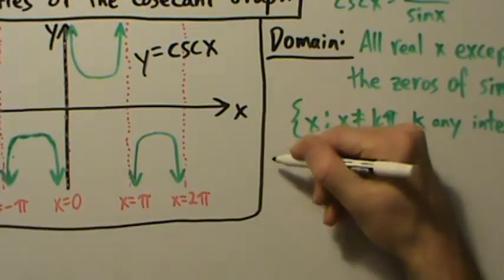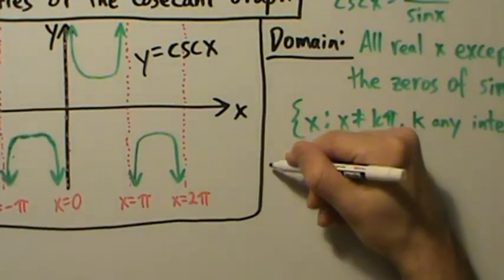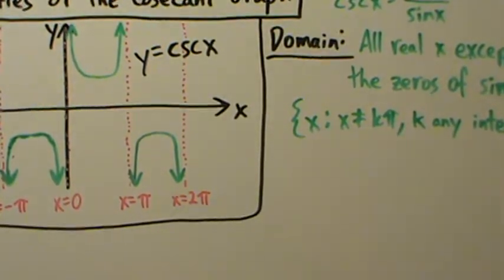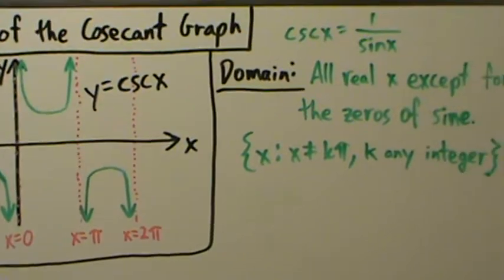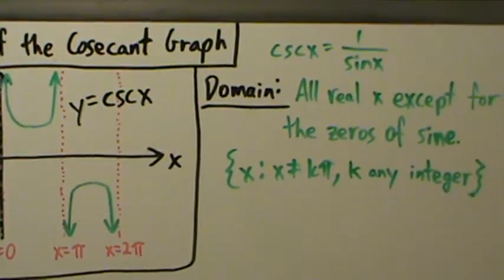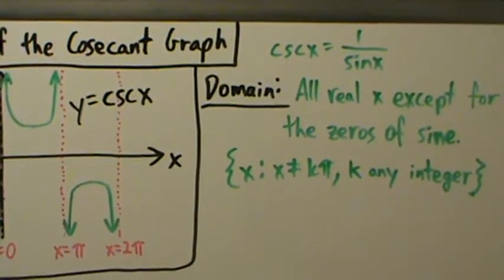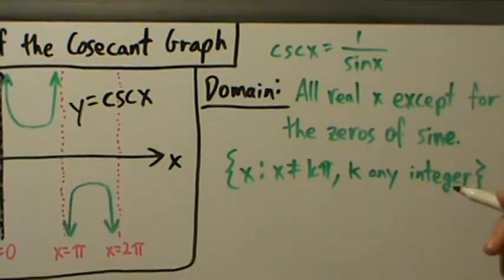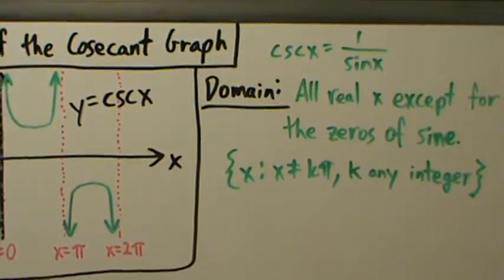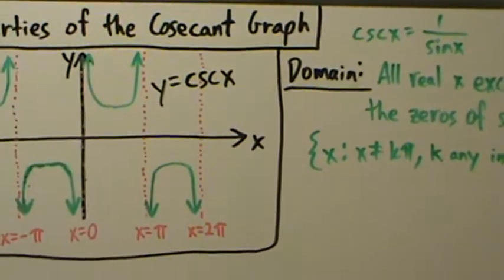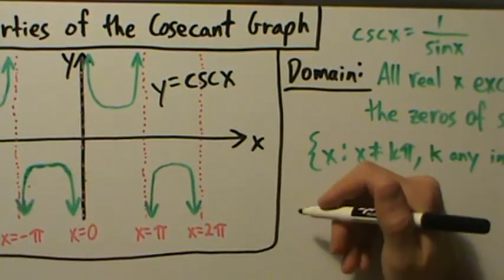It's also worth pointing out that this is the exact same domain as the cotangent function, because cotangent is cosine divided by sine. So cotangent and cosecant have the same denominator, and therefore the same domain, because there are no other restrictions for either one of them.